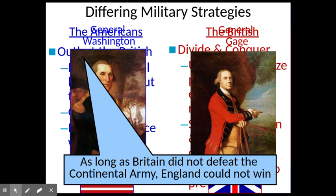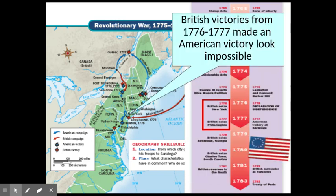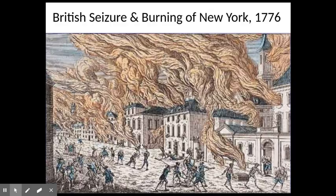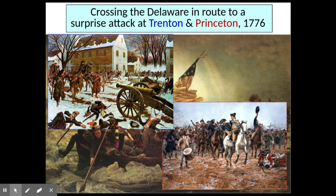The British strategy was to divide and conquer the colonies. They thought they had more loyalists in the south, but when they got there the south turned against them as well. Early British victories — including capturing and burning New York — made it look impossible for the colonies to win. Then on Christmas Eve 1776, Washington made his famous crossing of the Delaware River, surprising British troops and capturing many of them along with their stores of arms and cannons. It was a major move — the surprise attack on Trenton and Princeton.